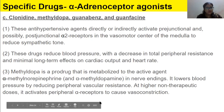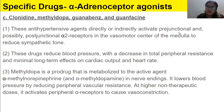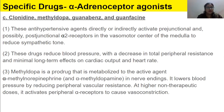Pre-junctional and post-junctional refer to the neuromuscular junction — similar to the pre-synaptic and post-synaptic terminology discussed earlier. These drugs reduce blood pressure with a decrease in total peripheral resistance and minimal long-term effects on cardiac output and heart rate. When resistance decreases and vasodilation occurs, blood pressure is reduced.